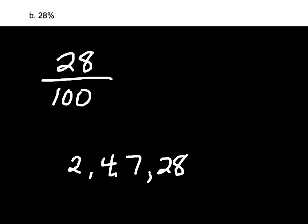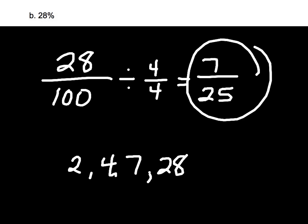Okay, 28%. I'm going to put that 28 over 100. I know the factors of 28 are 2, 4, 7, and 28. Obviously, 28 can't go into 100. 7 can't either. 4 can. So I'm going to divide both the numerator and denominator by 4. I could have certainly divided by 2 and then reduced again. So 28 divided by 4 is 7. 100 divided by 4 is 25. So our final fraction for that is 7 25ths.